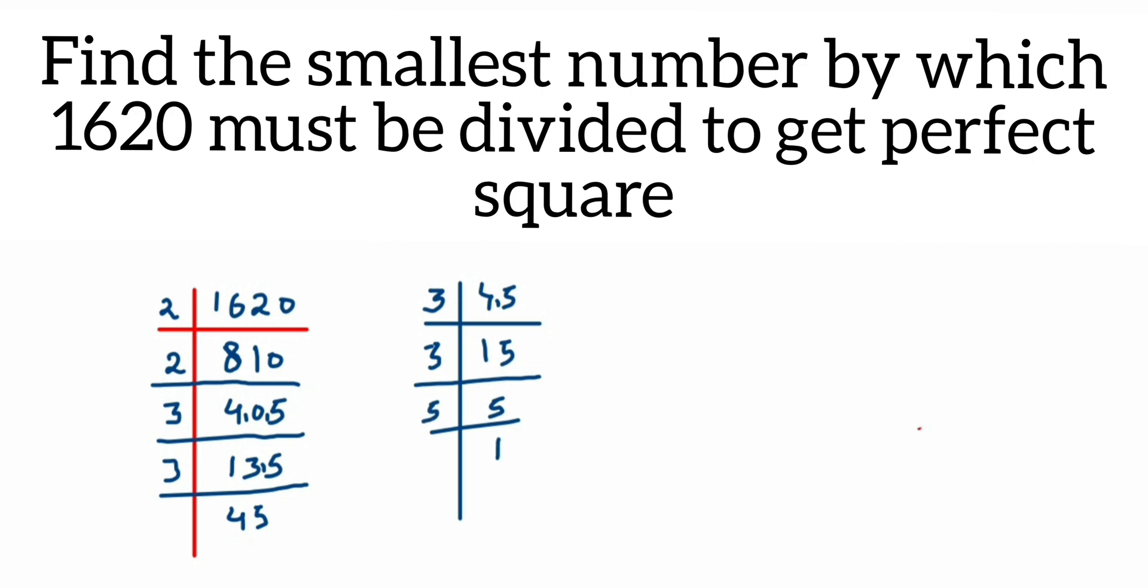From here, we can write 1620 equals 2×2, then 3×3, then 3×3, and then 5.